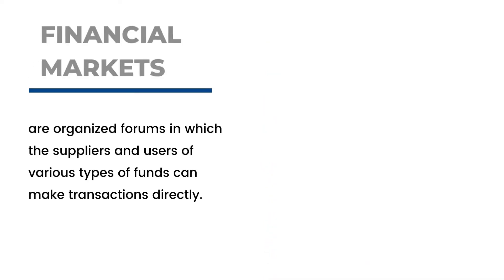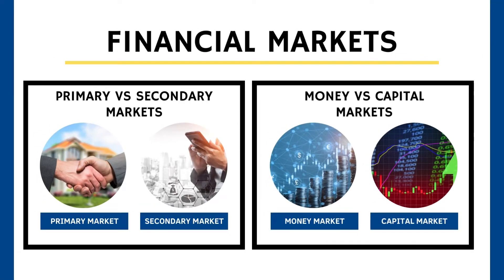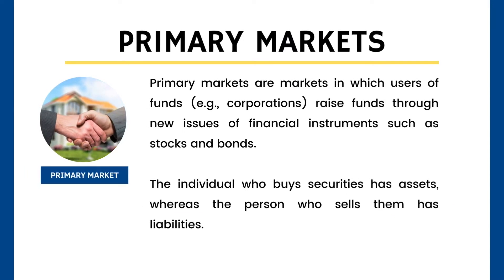Financial markets can be distinguished along two major dimensions: primary versus secondary markets. Primary markets are markets in which users of funds — for example, corporations — raise funds through new issues of financial instruments such as stocks and bonds. The individual who buys securities has assets, whereas the person who sells them has liabilities.